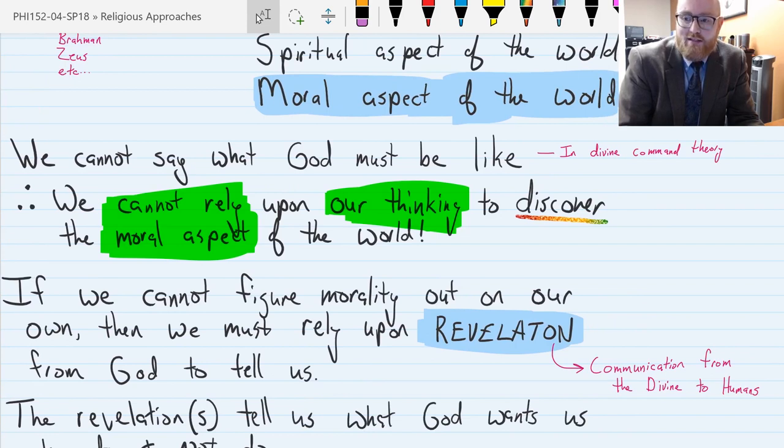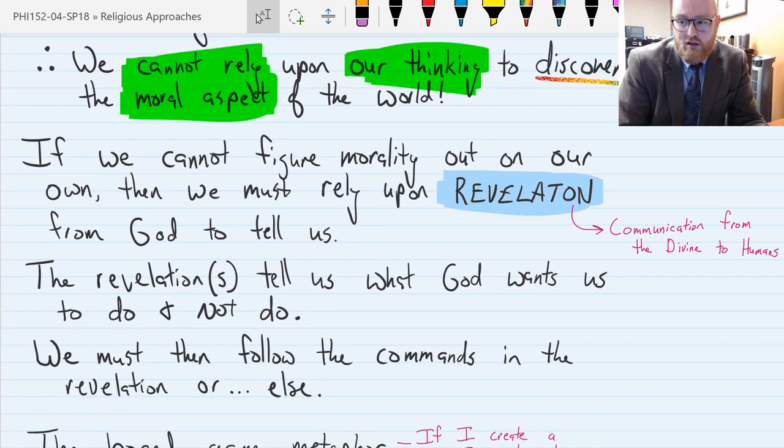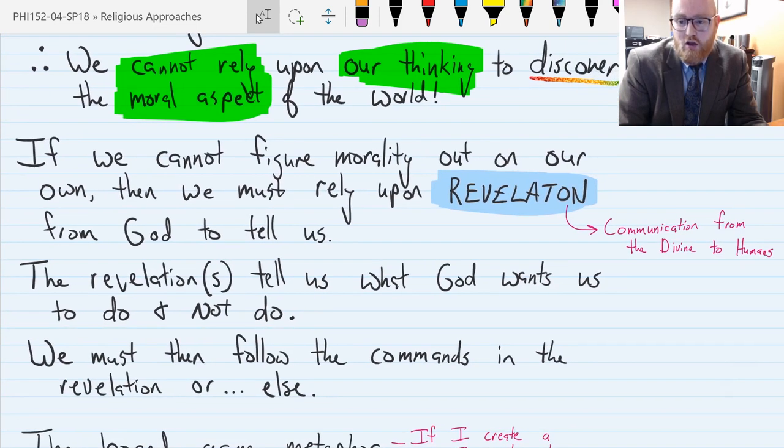Because we don't get to say what God is like in divine command theory. God could be rational, could be consistent, or God could be inconsistent, could be irrational. But we don't get to say. So in divine command theory, we are creations of the divine. And so we don't get to say what the divine is like. A car can't say anything about the car factory. It just is a product of that factory. And that's the relationship between the two. So we cannot rely on our thinking to discover the moral aspect of the world in divine command theory. Instead, we have to rely upon revelation, communication from the divine to tell us.